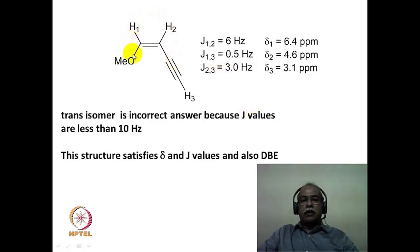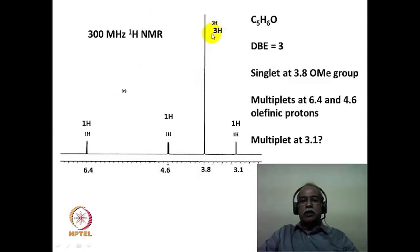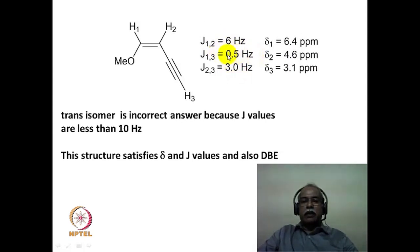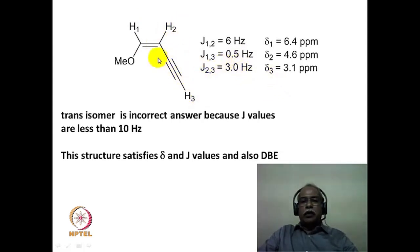The structure satisfying all this data is the cis isomer of methoxy butenyne. This is a methoxy butenyne because the NMR shows a methoxy singlet around 3.8 ppm, two olefinic hydrogens, and one acetylene hydrogen. We assign the cis isomer specifically because there are no coupling constants greater than 10 Hz. H1–H2 vicinal coupling is about 6 Hz, H1–H3 (a five-bond coupling) is about 0.5 Hz, and H2–H3 (a four-bond coupling) is about 3 Hz. The trans isomer is ruled out because J values would be greater than 10 Hz for trans vicinal coupling.